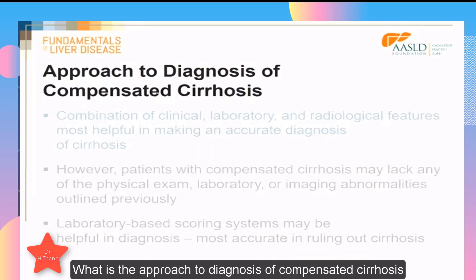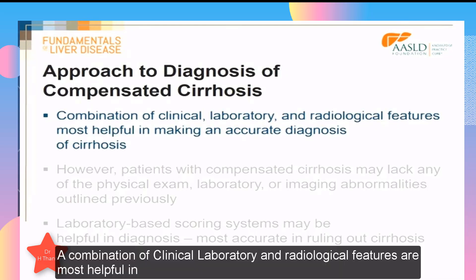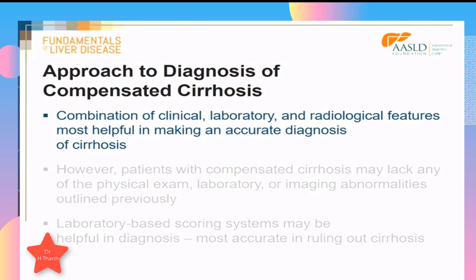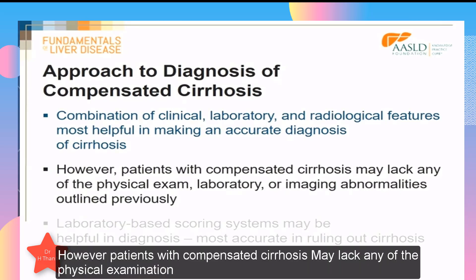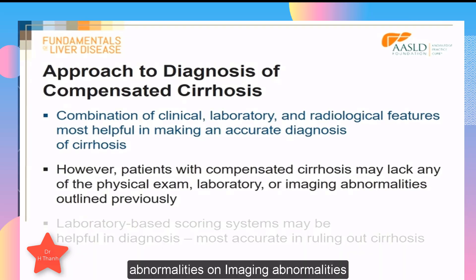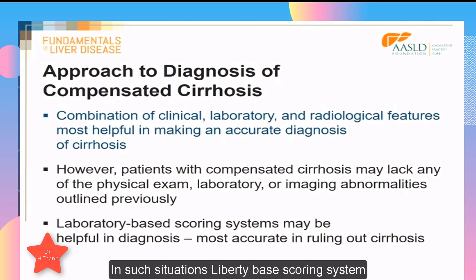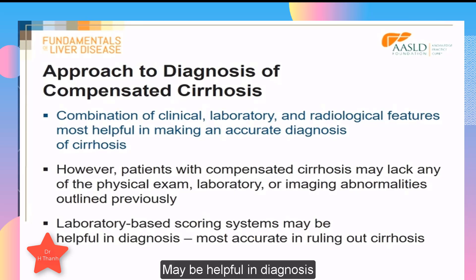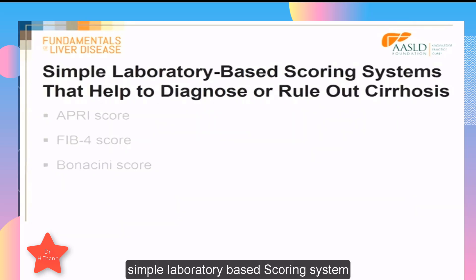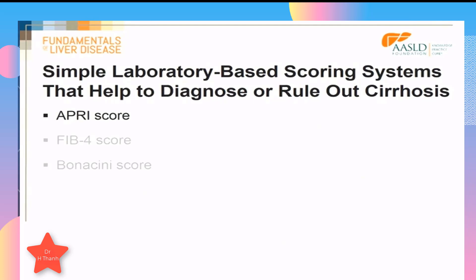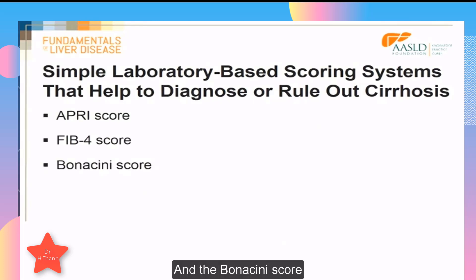The approach to diagnosis of compensated cirrhosis relies on a combination of clinical, laboratory, and radiological features. However, patients with compensated cirrhosis may lack any of the physical examination, laboratory, or imaging abnormalities. In such situations, laboratory-based scoring systems may be helpful. The simple laboratory-based scoring systems are the APRI score, the FIB-4 score, and the Bonaccini score.